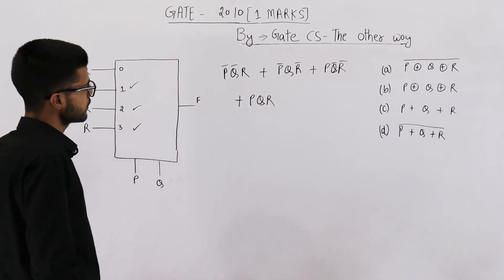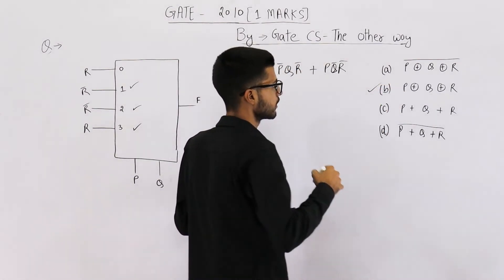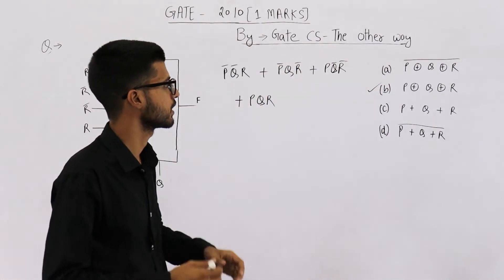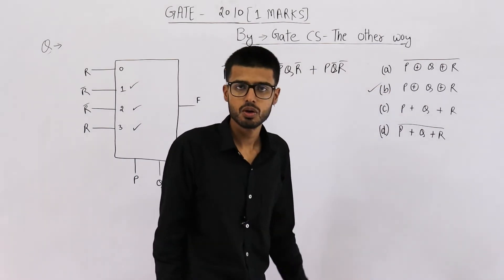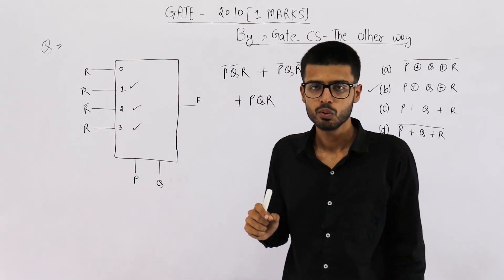You can clearly see this has to be option b. This is your answer. How can I say that option b is your answer? Option b is XOR of three variables. XOR of three variables will output one only when odd number of inputs are one.